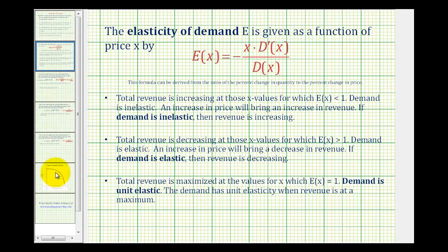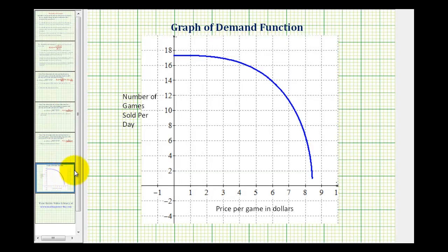So the idea here is if we have a demand function like the one we were given, at what price could we charge to maximize revenue? Notice as the price increases, the demand does drop. But somewhere in here, we have an ideal price to maximize revenue.